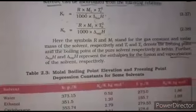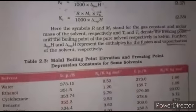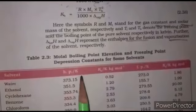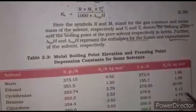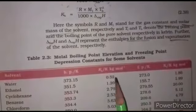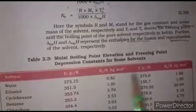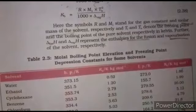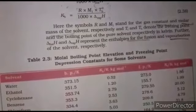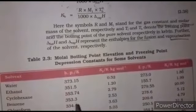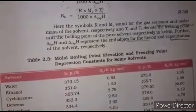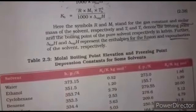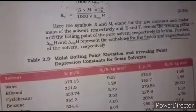These are the values of Kf and Kb for some common solvents at particular temperatures, along with their freezing temperatures. There is no need to memorize them — these values of Kf and Kb will be given in numerical problems.